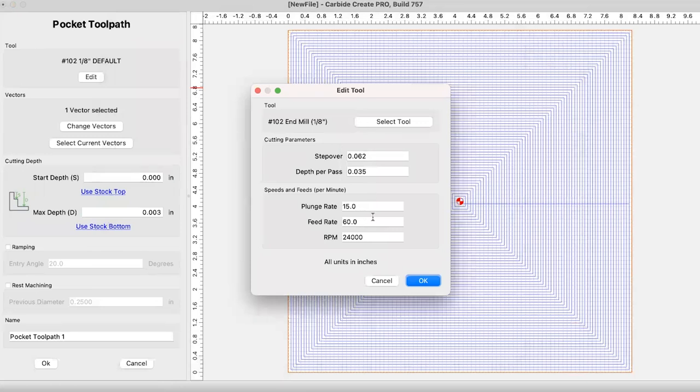And in the toolpath, we want to do a pocket because we're going to mill out the whole entire wasteboard. We're going to use current selection because our box is selected in orange. Now on this, we're going to want to set the max depth to two or three thou, point zero zero three. And the reason why we do it so low is because we're not trying to completely mill out the wasteboard, we're just kind of leveling it out.